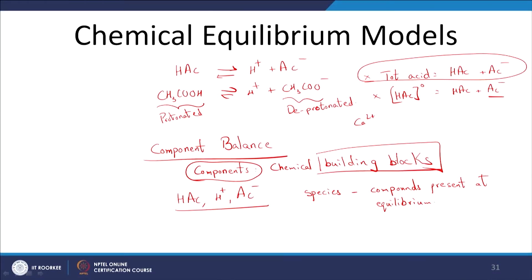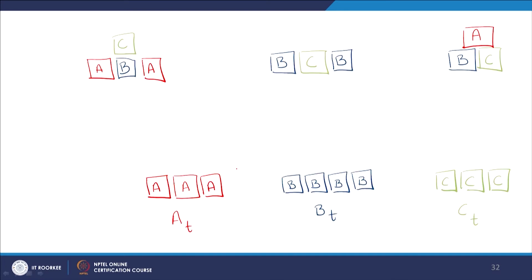For example, in the acetic acid case, HAc, H+, and Ac- are the three species. Species are those compounds that are going to be present at equilibrium in your particular solution. Once I identify the species, I will need to choose or define something called components, which are the chemical building blocks.